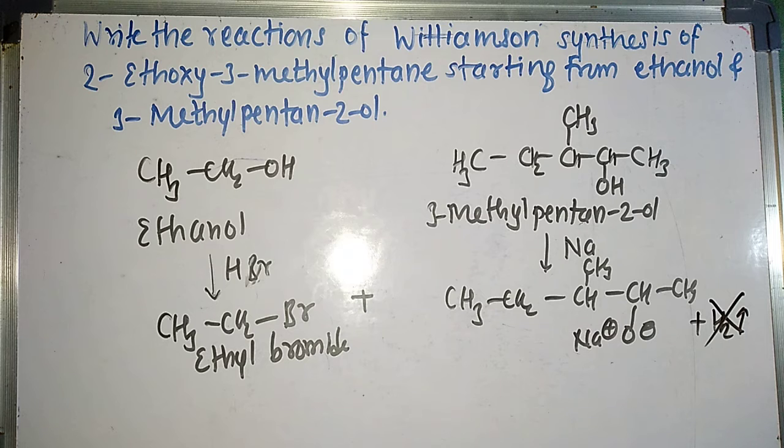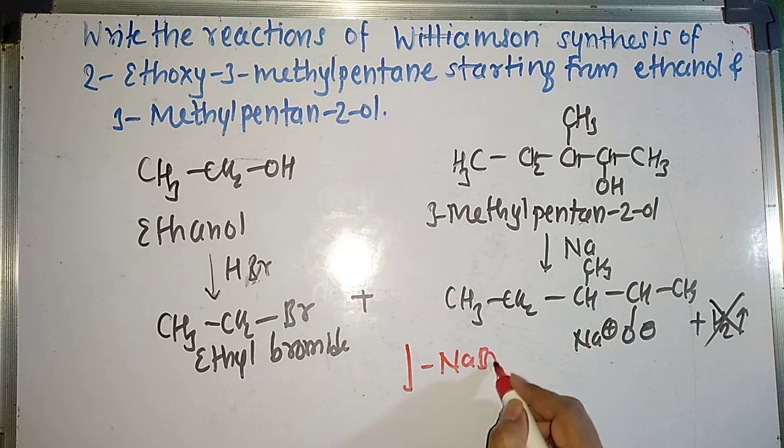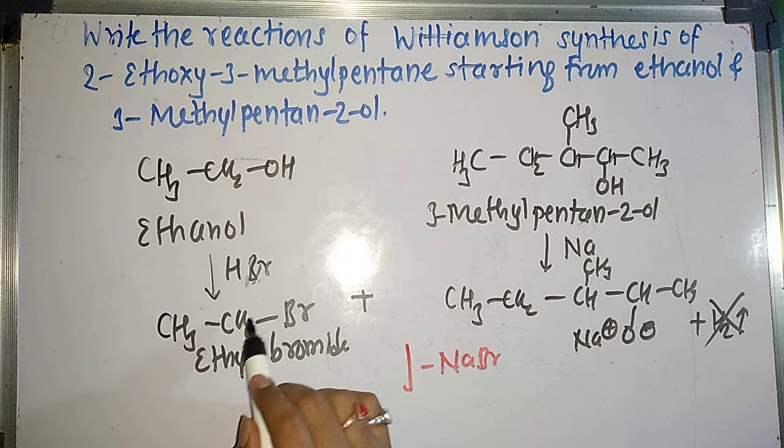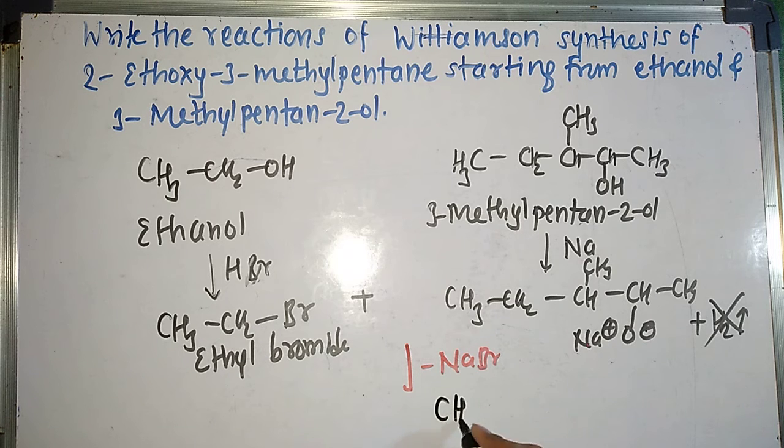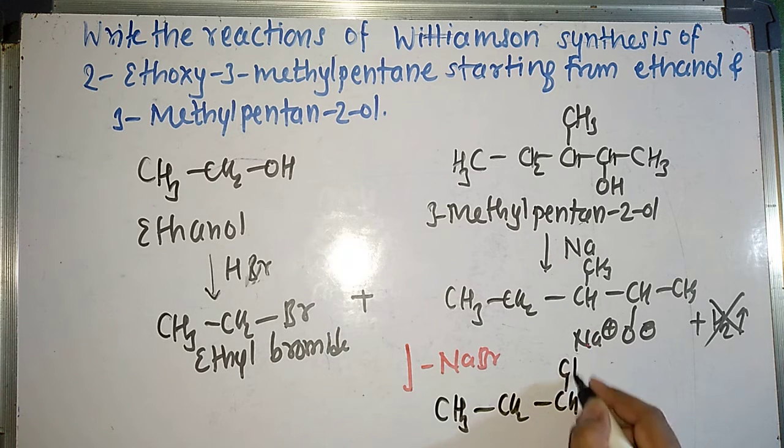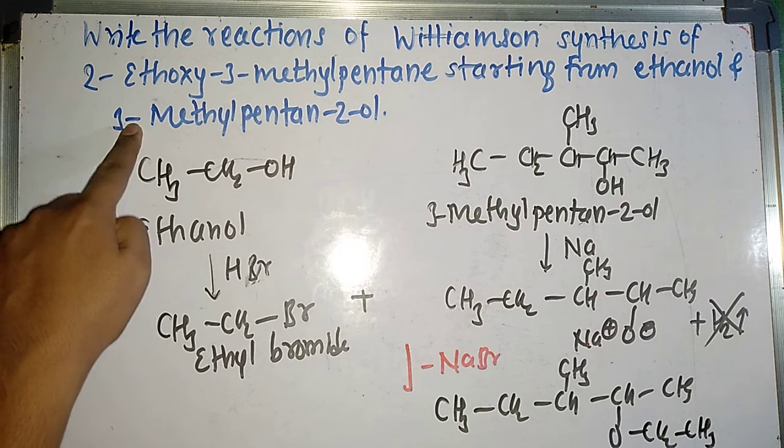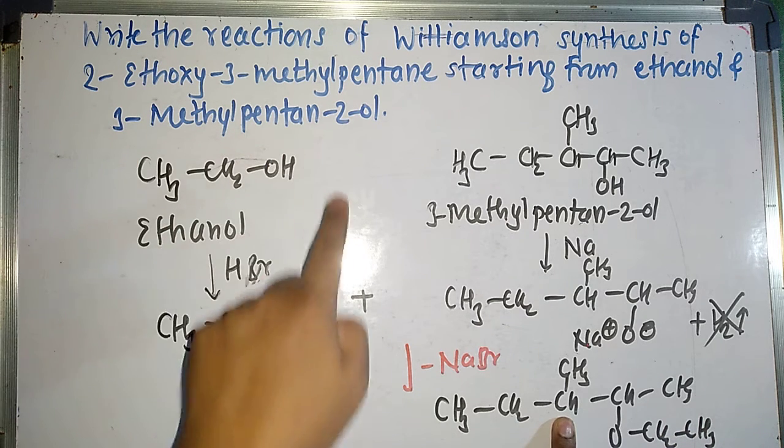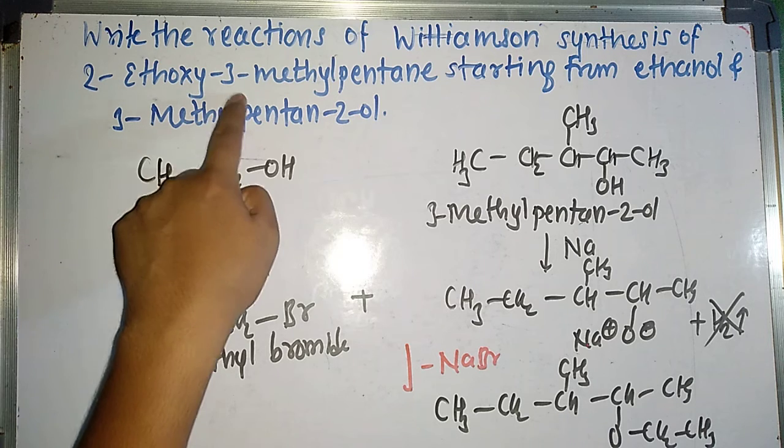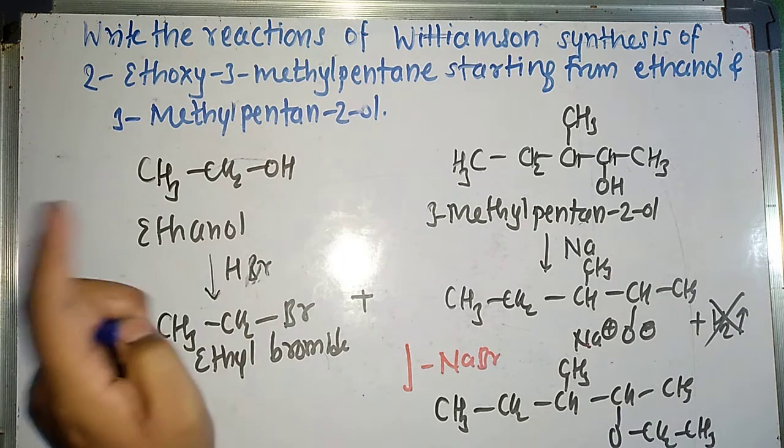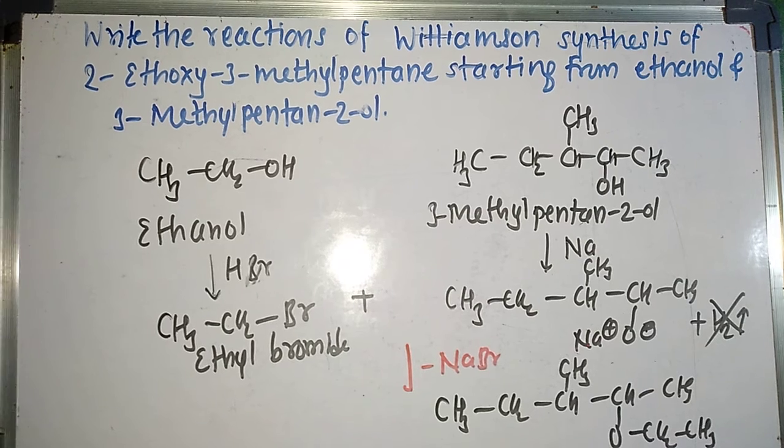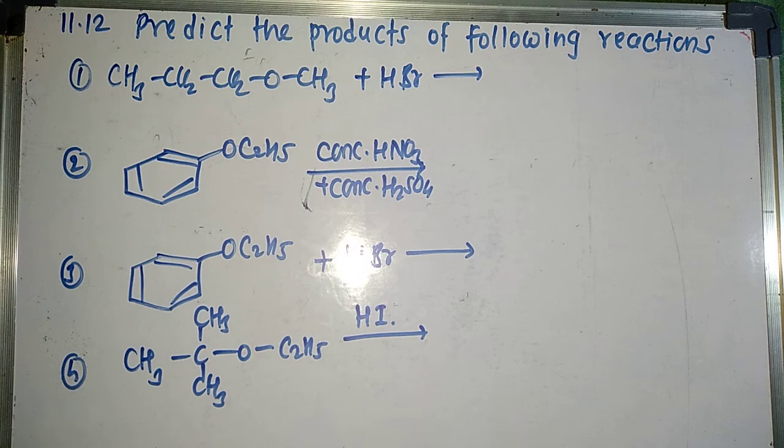So what will happen? This Na and Br together will produce NaBr as a byproduct. So what is our main product? Our main product is now this O minus will attack on this carbon atom. Bromine will leave. So the main product will be CH3-CH2-O-CH(CH3)-CH(CH3)-CH2-CH3. So this molecule is nothing but 2-ethoxy-3-methylpentane, the correct structure of this molecule.